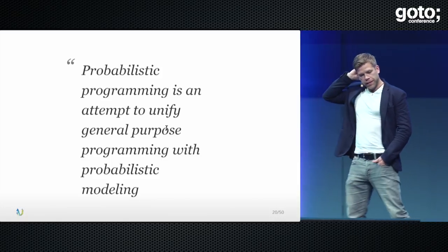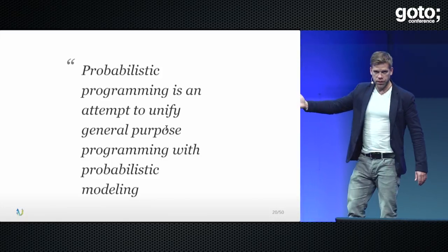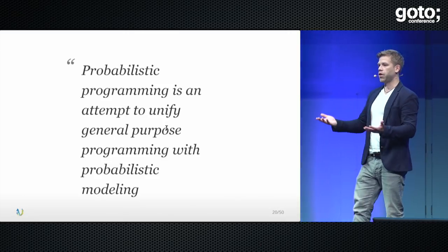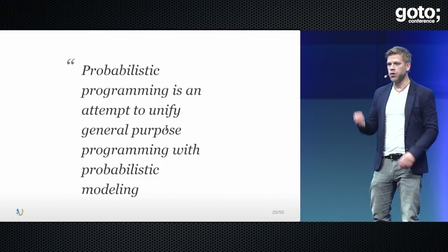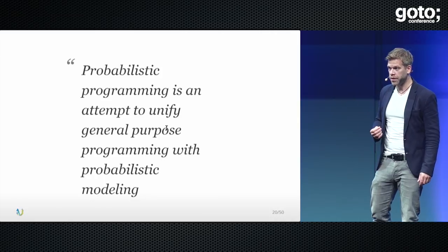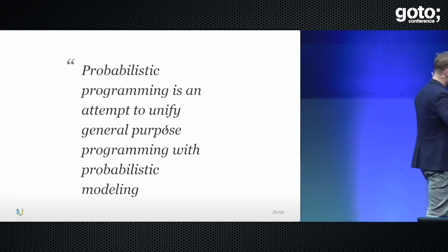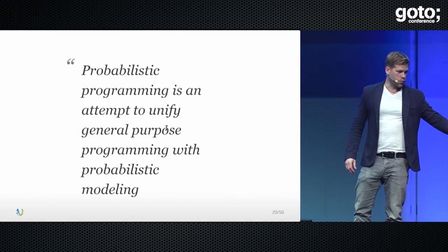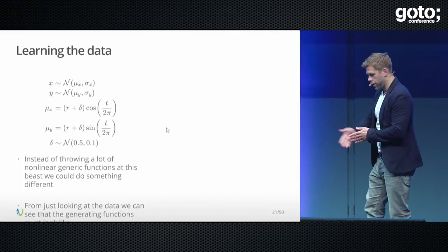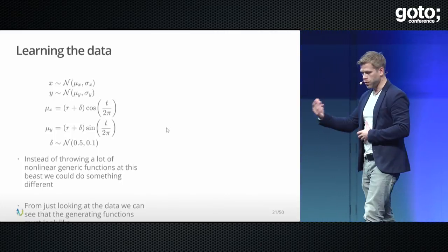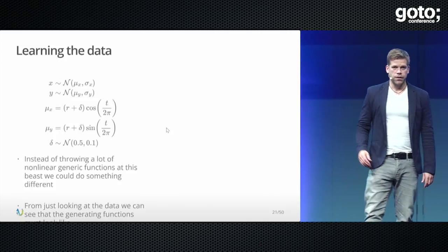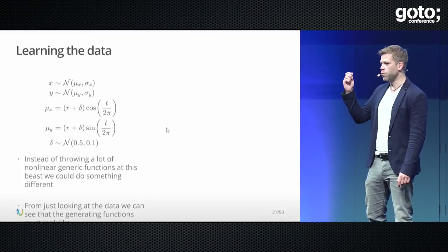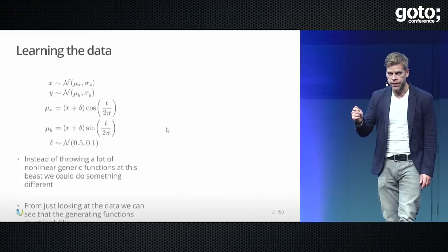Probabilistic programming is basically an attempt to unify general-purpose programming with probabilistic modeling — which is what everyone should be doing. Whatever model you're creating, you are doing probabilistic modeling; you've just accepted a lot of assumptions you didn't explicitly make. Even though it's tempting to fire up scikit-learn or TensorFlow or MXNet, it's still important to understand the concept — not the math behind it necessarily, but what these algorithms do and more importantly, what they don't do.